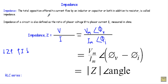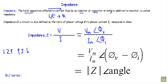When does the word impedance come into existence? If in a circuit we have inductance L, or capacitance C, or both, in addition to resistor R, the total opposition to current flow due to the inductance or capacitance or both, in addition to resistance, will be known as impedance — the total opposition offered to current flow by an inductor, capacitor, or both in addition to a resistor.